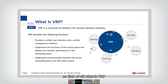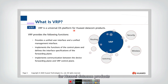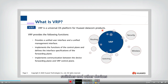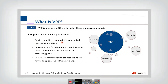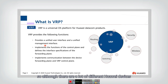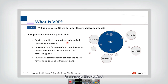So first of all, what is VRP? VRP is a universal operating system platform for Huawei Datacom products. VRP can be an OS platform for routers, switches, and other devices. The main functions VRP provides include a unified user interface and a unified management interface. So although there are a lot of different Huawei devices, we can all use VRP as the unified interface to manage them.